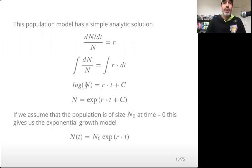We exponentiate both sides to get N by itself. The exponential of the log cancels each other out, so we get N and we have an exponent of everything on this side.